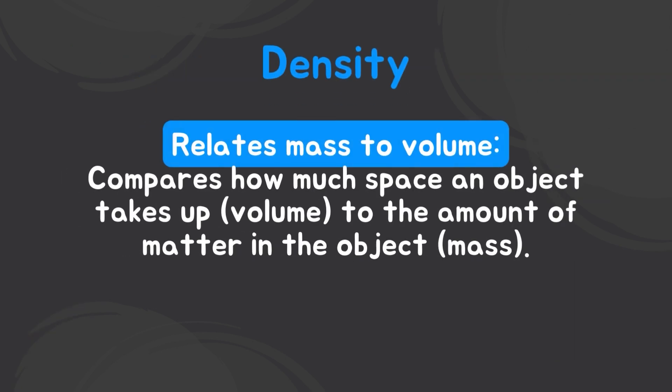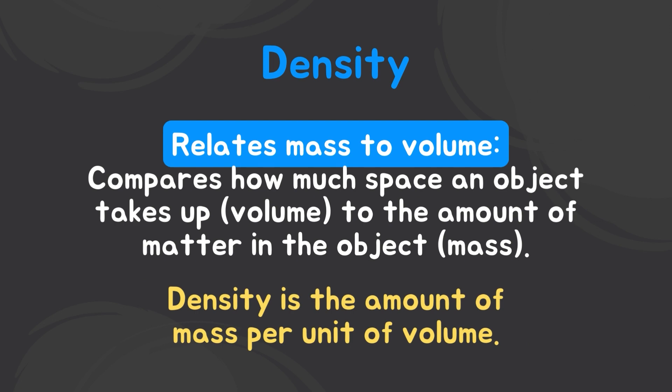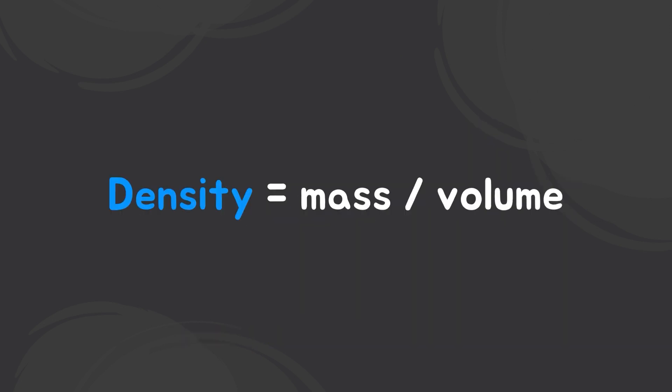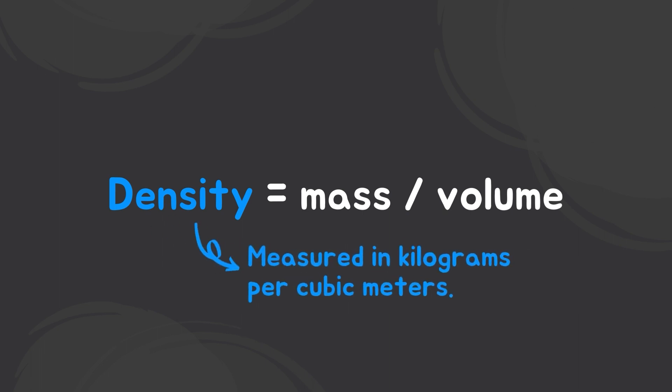Density relates mass to volume. Density compares how much space an object takes up to the amount of matter in the object. In other words, density is the amount of mass per unit of volume. The formula for density is as follows: density equals mass over volume. Density is measured in kilograms per cubic meters.